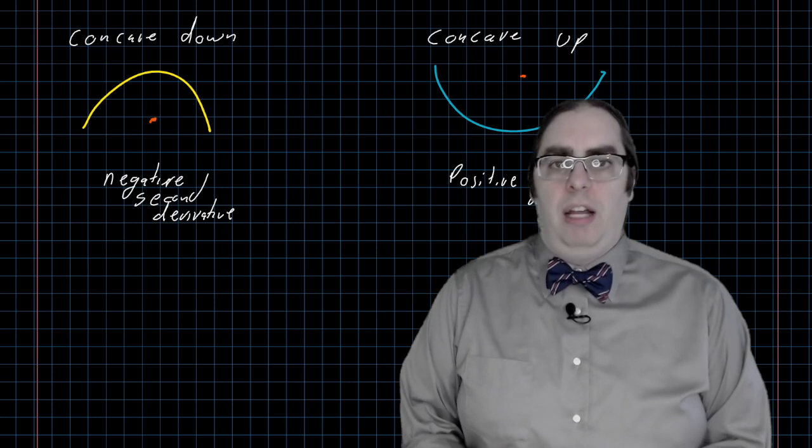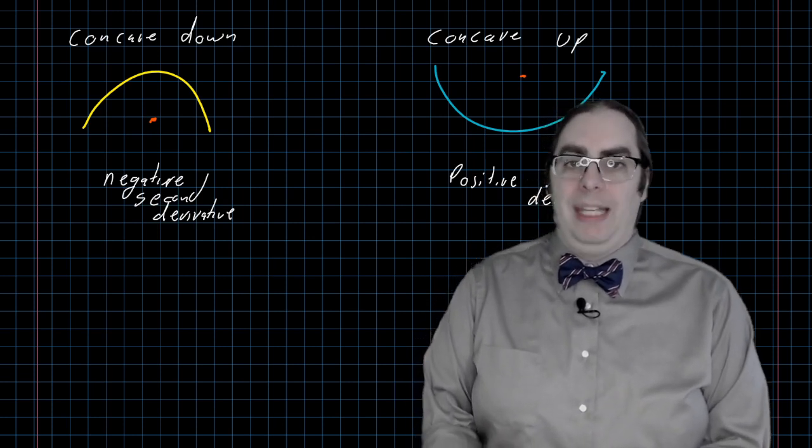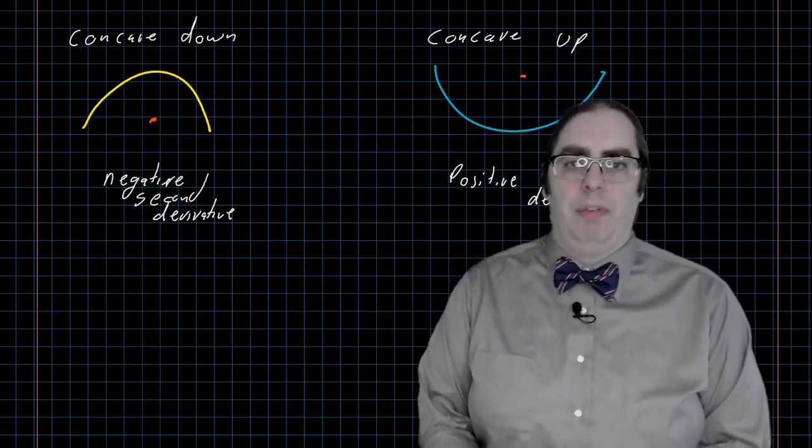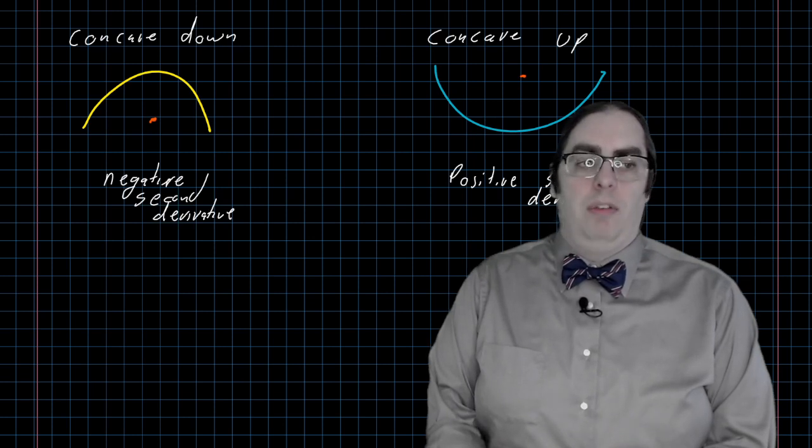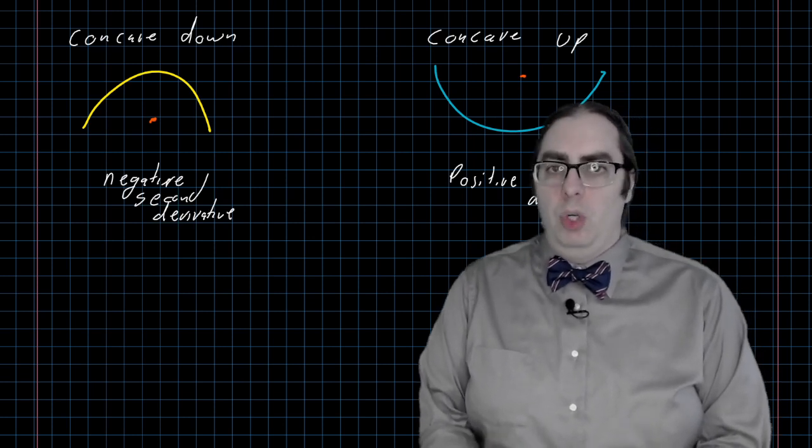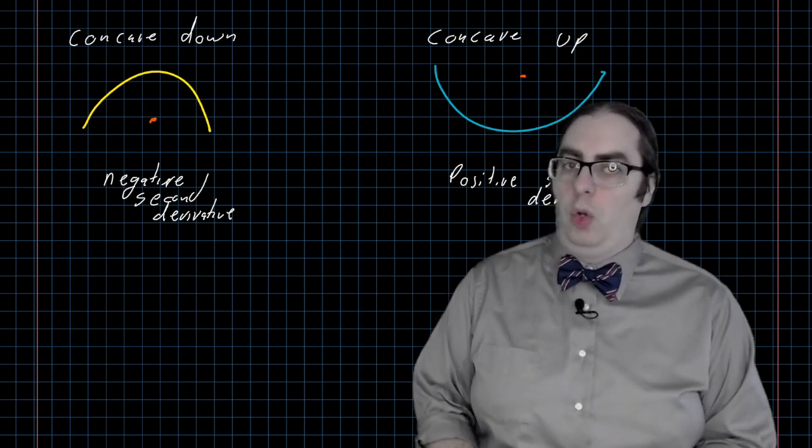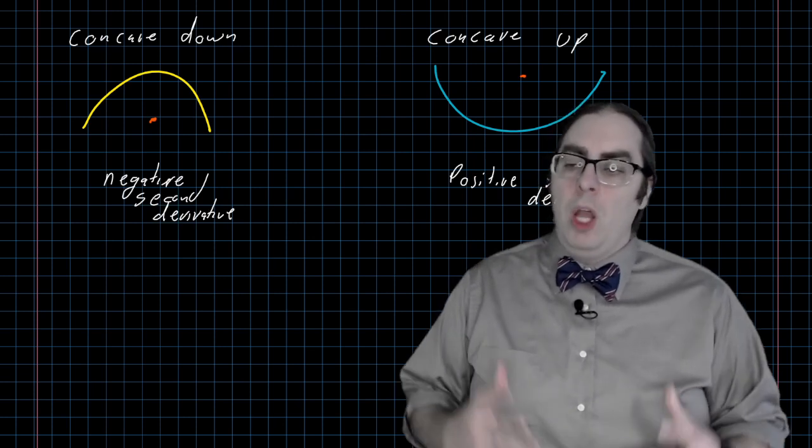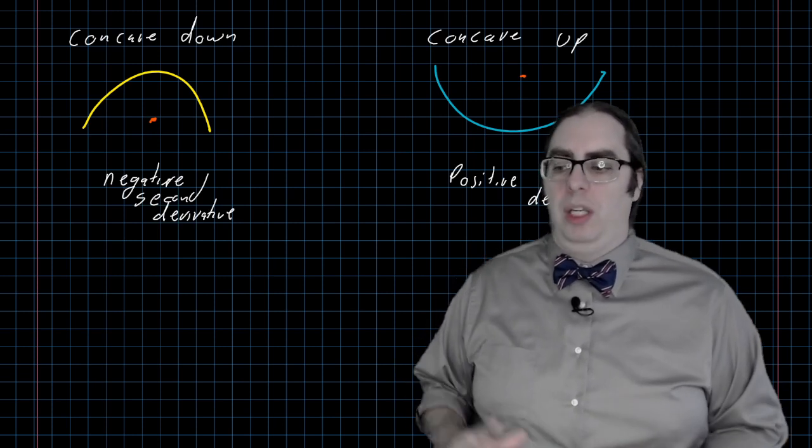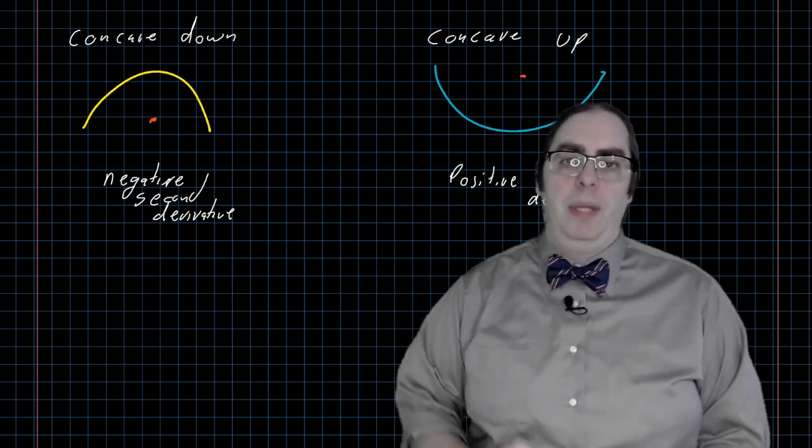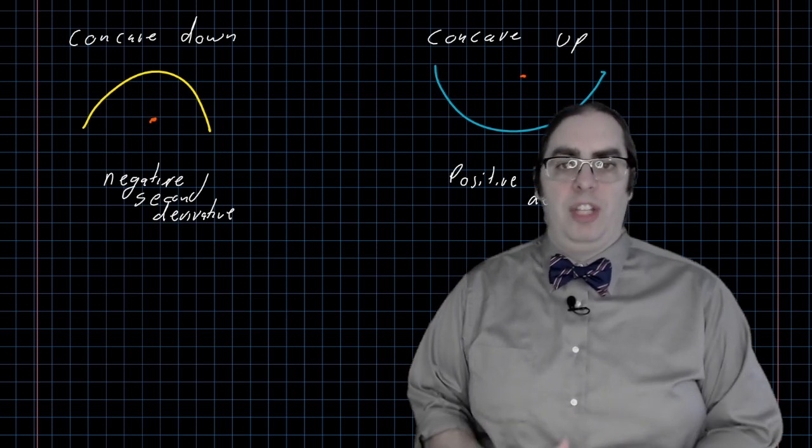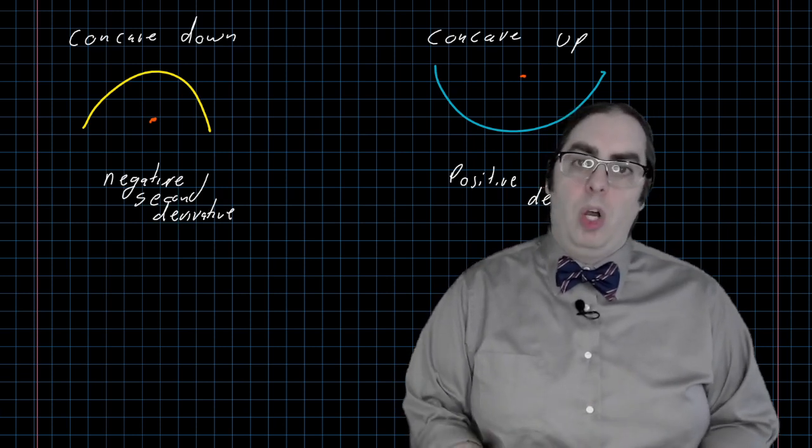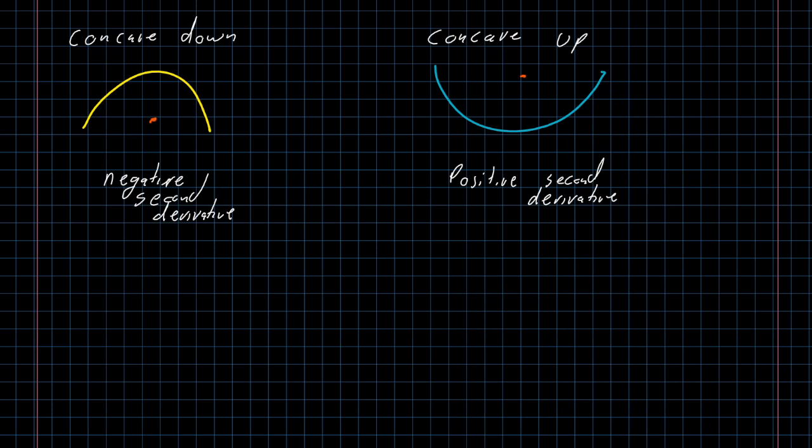And just like our study of the first derivative, the only way you can go from an increasing function with a positive first derivative to a decreasing function with a negative first derivative is for the first derivative to either go through zero or go through a moment where it's undefined. Those are the only possibilities. We called those critical points on the first derivative. On the second derivative, the same story. The only way to go between concave up and concave down is for the second derivative to either be zero or undefined. We'll call those points points of inflection.